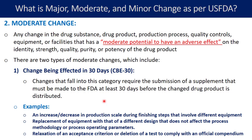Another CBE30 example is relaxation of an acceptance criteria or deletion of a test to comply with an official compendium. For instance, if your product is now published in a USP monograph and the USP compendium limit is slightly relaxed compared to your in-house limit, you can relax your acceptance criteria — and that change is classified as a CBE30 change.